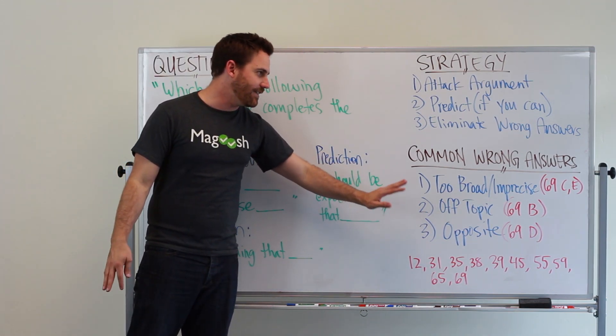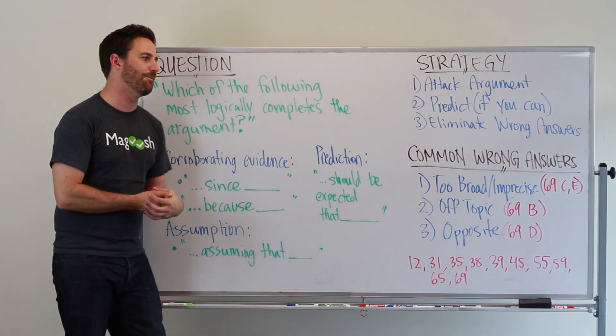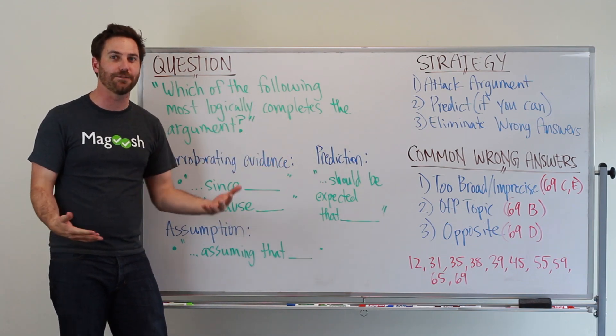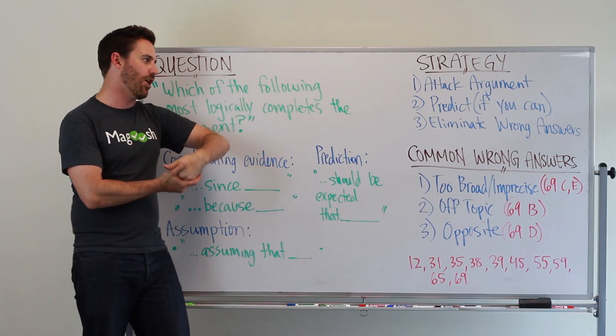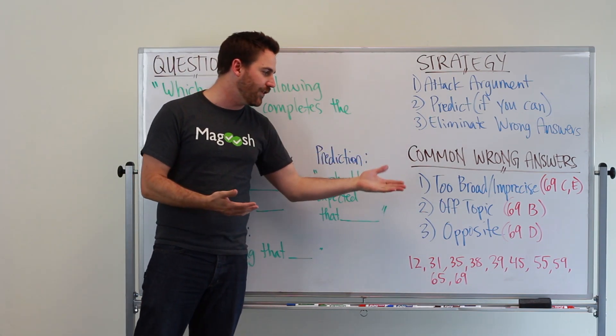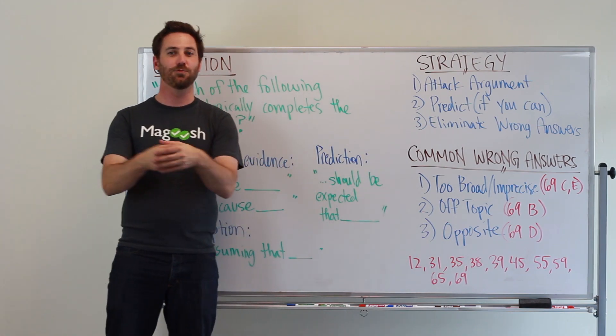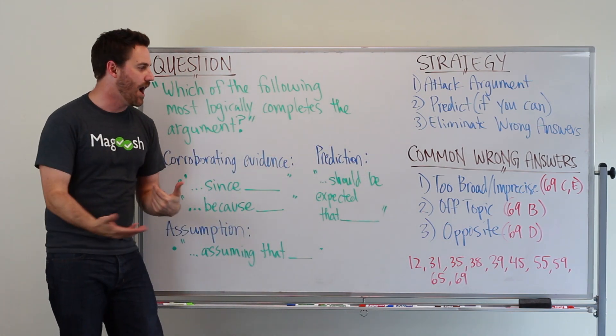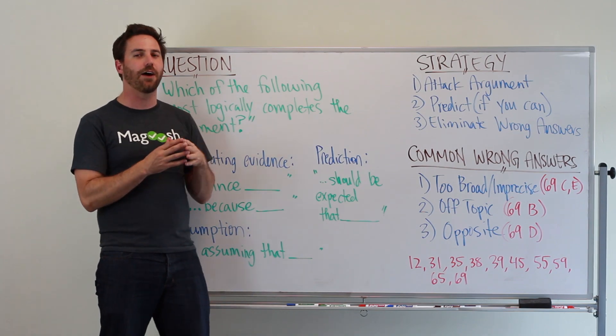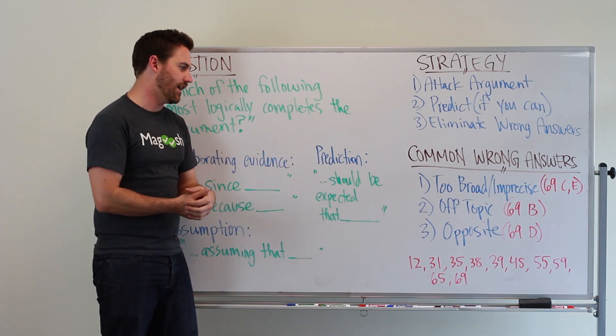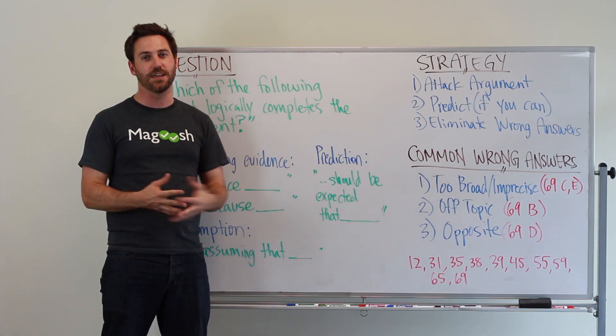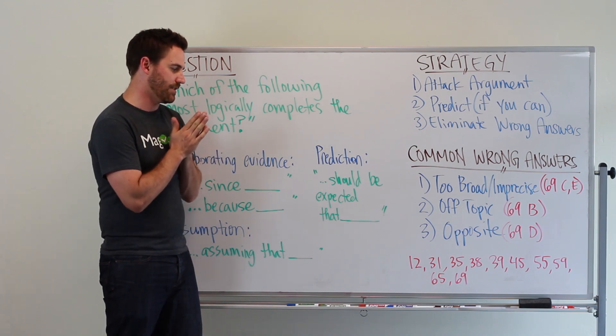And then the third one is if it's the opposite. So it might do the opposite of what we're looking for in the argument. If we want to improve the roads, maybe this answer choice will actually ruin the roads or make it worse. So keep your eye out for things that make the opposite of the conclusion possible or true.